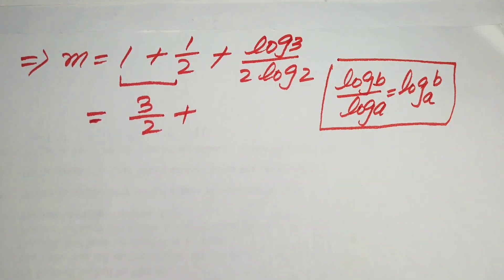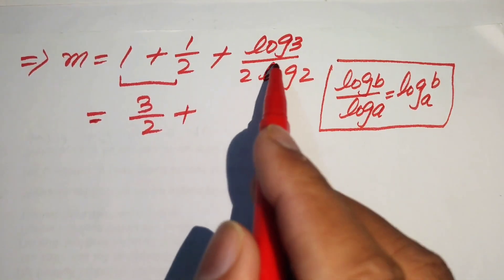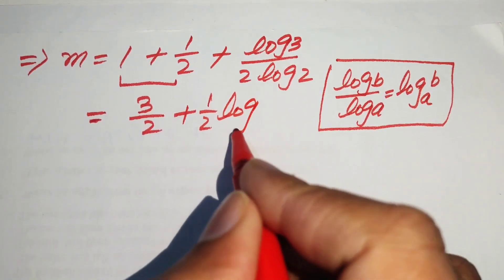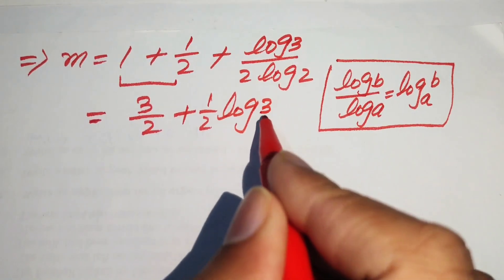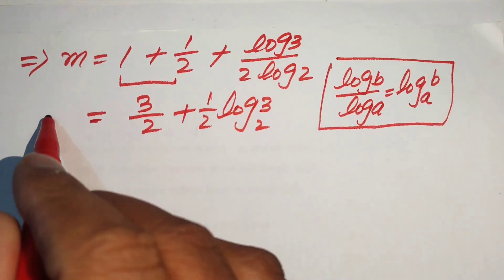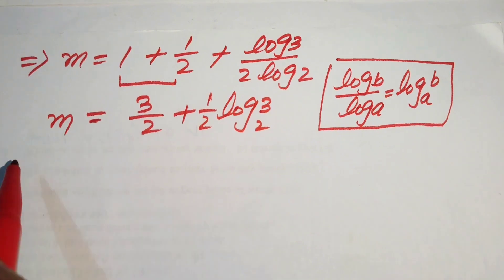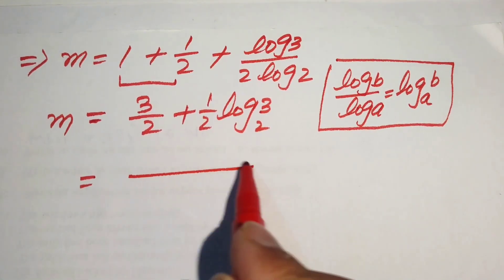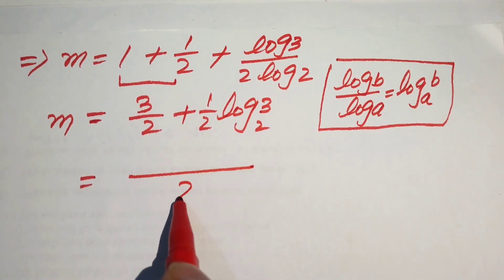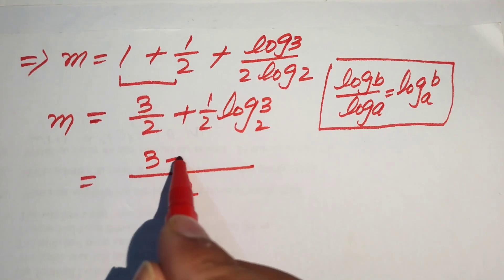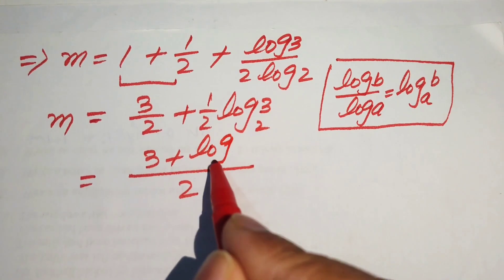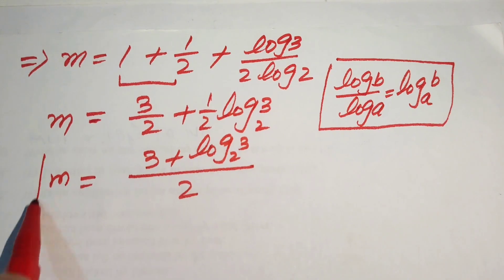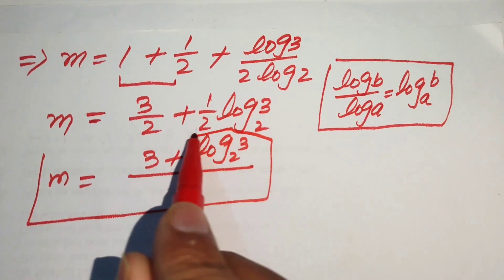We use this change-of-base property on the remaining fraction and write that term as one-half times log base 2 of 3. Taking the LCM, this gives the final value: m is equals to (3 plus log base 2 of 3) divided by 2.